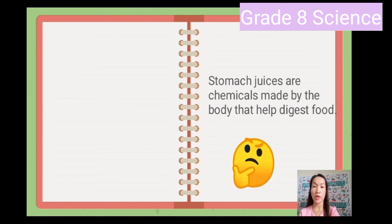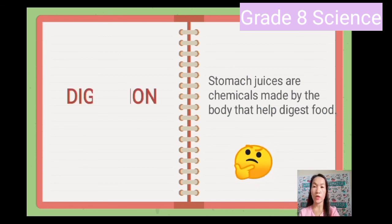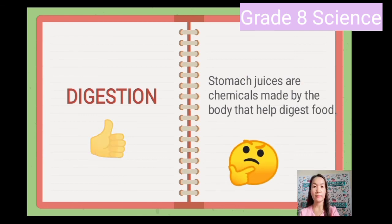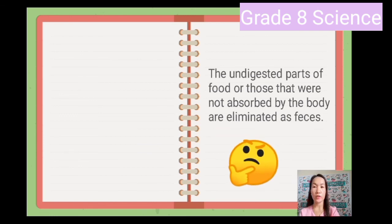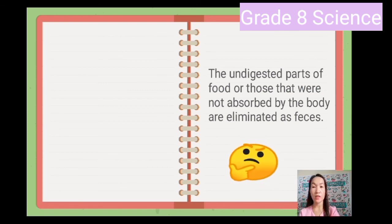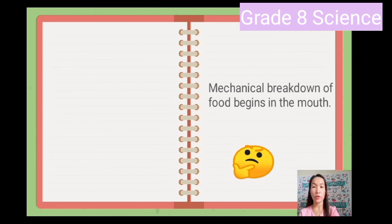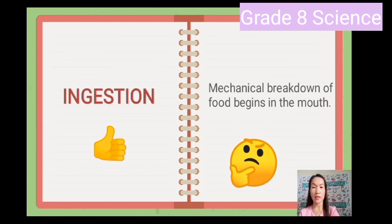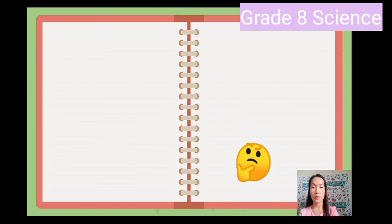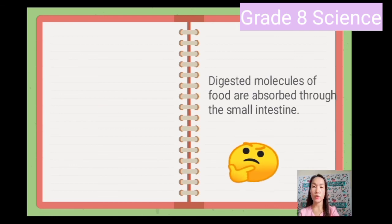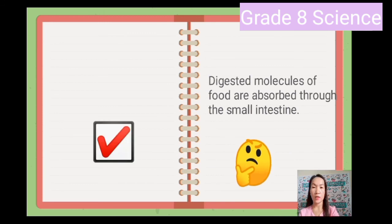What phase of digestion is being described in this statement? If your answer is digestion, then you are correct. Next: 'The undigested parts of food, or those that were not absorbed by the body, are eliminated as feces.' That is elimination. Next: 'Mechanical breakdown of food begins in the mouth.' That is ingestion. The last one: 'Digested molecules of food are absorbed through the small intestine.' That is absorption.